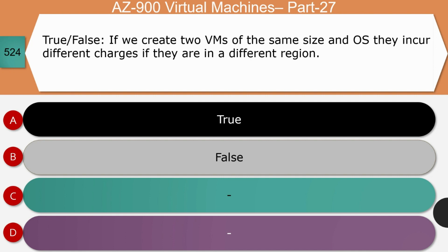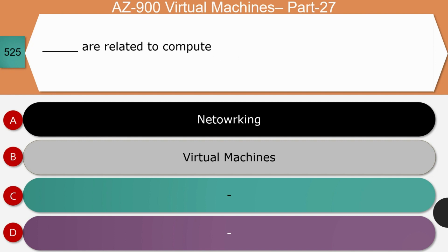Question 4: True or false — if we create two VMs of the same type and OS, they incur different charges if they are in different regions. The answer is true. Two virtual machines of the same size will incur different monthly charges based on metrics such as CPU usage, disk I/O, type of storage, and the region. Azure services are not the same cost across all regions. Question 5: What dash is related to compute? The answer is virtual machines. Compute services provide virtual machines, containers, batch processing, and remote application access.